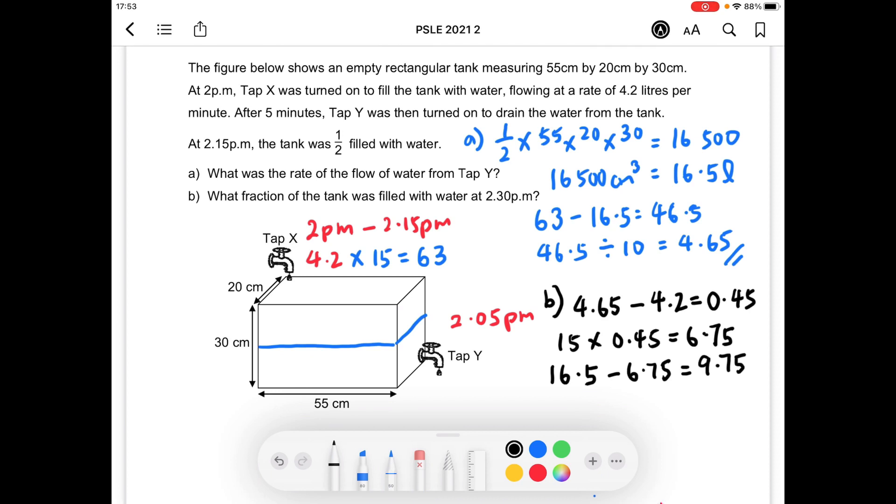9.75 liters. We can find the capacity of the tank by taking 16.5, which is actually half the capacity of the tank, times 2 to get 33. So 33 liters is the capacity of the tank. Now we are able to answer part B.